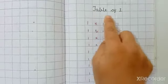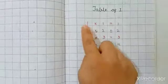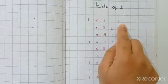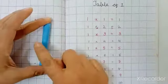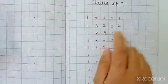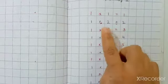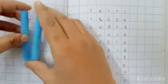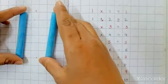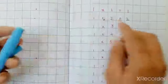See this is a table of one. One ones are one. It means one chalk one time, so total one chalk. One twos are two. It means one chalk two times. So total two is equal to two.